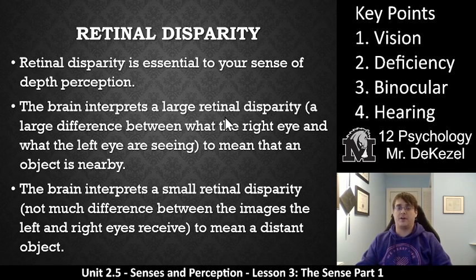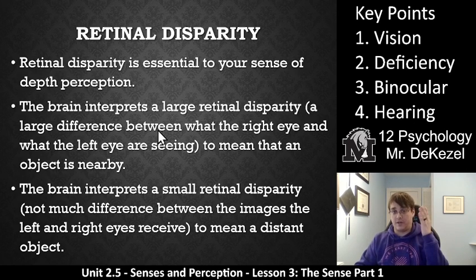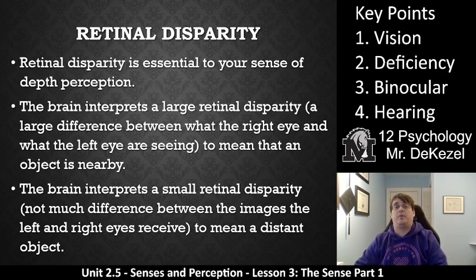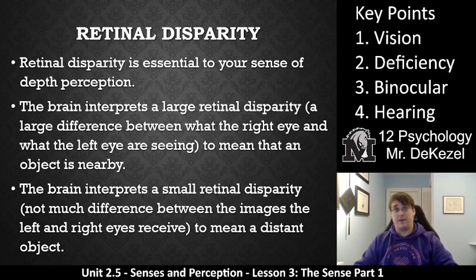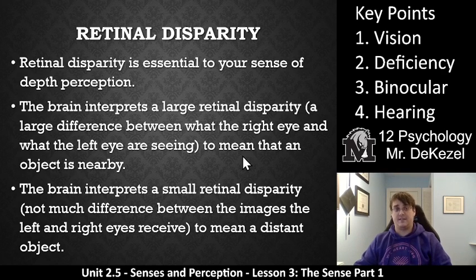You can do this at any time — just hold up your thumb and cover something, then open one eye and close the other. This retinal disparity, the difference between the two images, is essentially your sense of depth perception. Your brain interprets a large retinal disparity as meaning an object is close — if there's a huge difference between what the right eye and the left eye are seeing, the object must be nearby. If there's less of a difference, it's farther away. So retinal disparity is really key for depth perception.